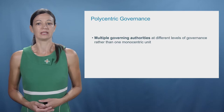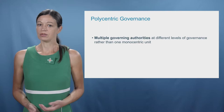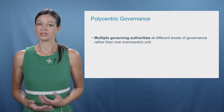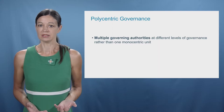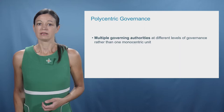For example, Chinese climate policy is in parts driven by local air pollution problems. This is because the main cause of Chinese air pollution is coal combustion. So reducing the use of coal causes fewer greenhouse gas emissions, but also less smog at the local level.